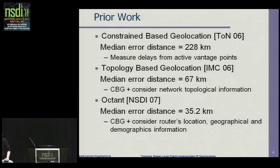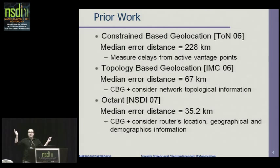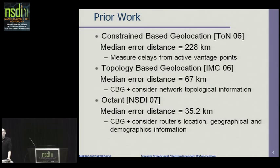The most recent work, to the best of my knowledge, was by people from Cornell University — the Octant system, in NSDI 2007. They also use network topology to figure out where the user is, but in addition they use external information. For example, if you end up geolocating a host in the middle of a desert, you can say it's not likely the user is actually there. By using information about where people actually live, they achieve a median error distance of 35.5 kilometers. We have designed a geolocation system that does 50 times better than Octant, 100 times better than TBG, and 300 times better than constraint-based geolocation.